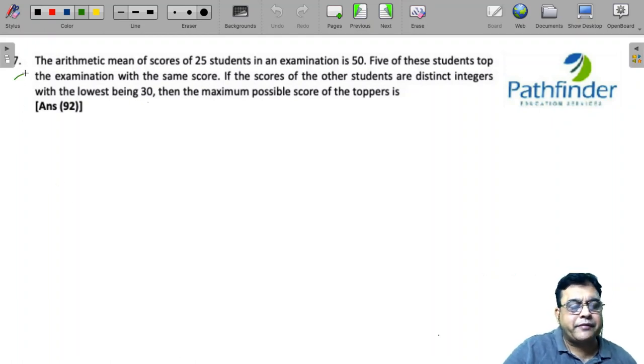CAT 21 slot 3, question number 7. The arithmetic mean of scores of 25 students in an examination is 50. Five of these students top the exam with the same score. If the scores of other students are distinct integers with the lowest being 30, then the maximum possible score of toppers is?